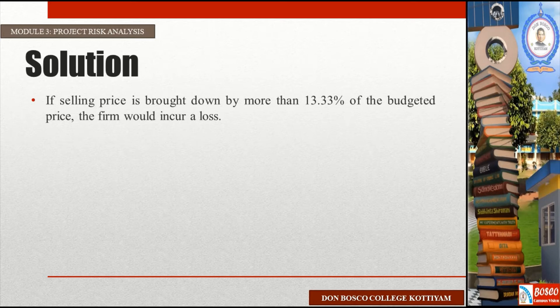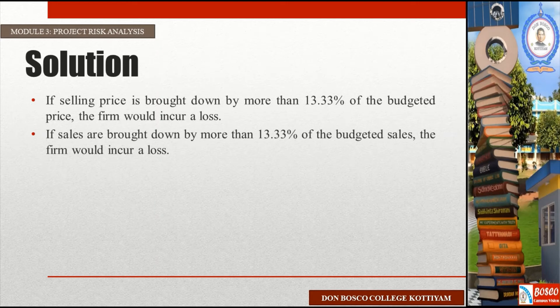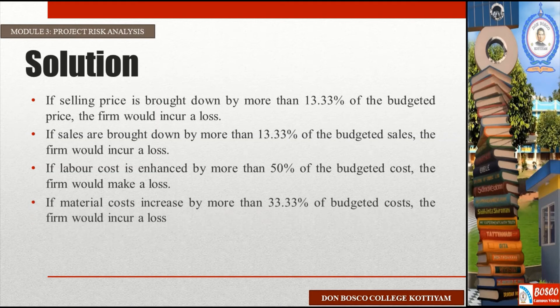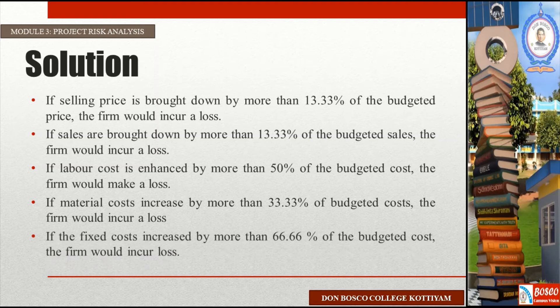Second factor: if sales are brought down by more than 13.33% of the budgeted sales, the firm would incur a loss. Third factor: if labor cost is enhanced by more than 50% of the budgeted cost, the firm would make a loss. Fourth factor: if material cost increases by more than 33.33% of the budgeted cost, the firm would incur a loss. Fifth factor: if fixed costs increase by more than 66.66% of the budgeted cost, the firm would incur a loss.